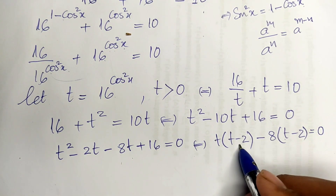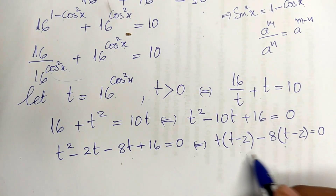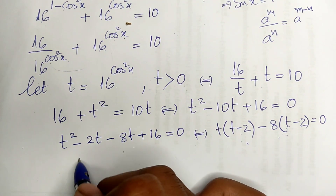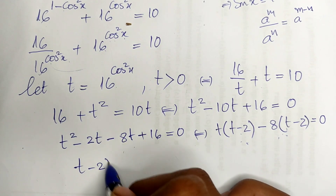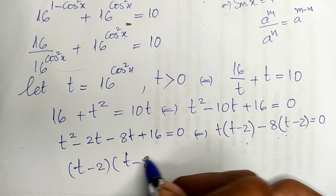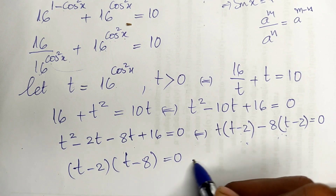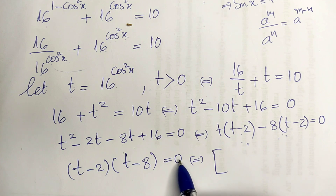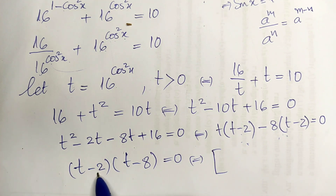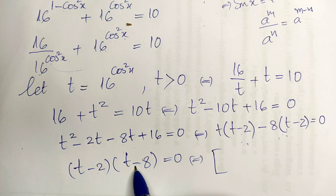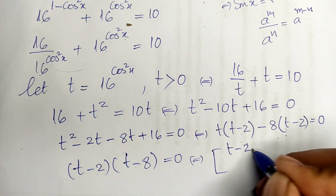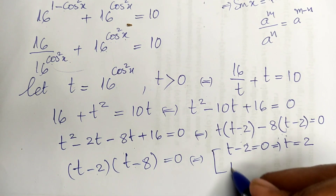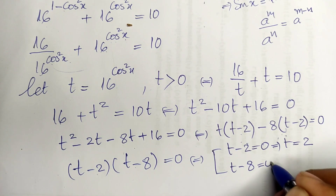Factoring by grouping, we get t times (t minus 2) minus 8 times (t minus 2) equals 0, which gives (t minus 2)(t minus 8) equals 0. So t equals 2 or t equals 8.